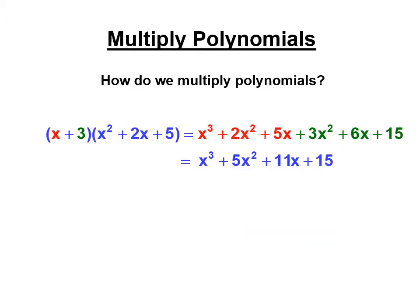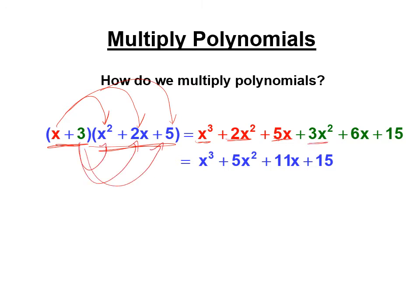We're going to be multiplying polynomials. In this example, you have a binomial times a trinomial. It's really advanced distributive property because you have to multiply everything by this red x. So x times x squared is x cubed, x times 2x is 2x squared, x times 5 is 5x. But you also have to multiply everything times this green 3: 3 times x squared is 3x squared, 3 times 2x is 6x, 3 times 5 is 15. Then combine like terms — 2x squared and 3x squared make 5x squared, 5x and 6x make 11x. And I've really just taught you the lesson.